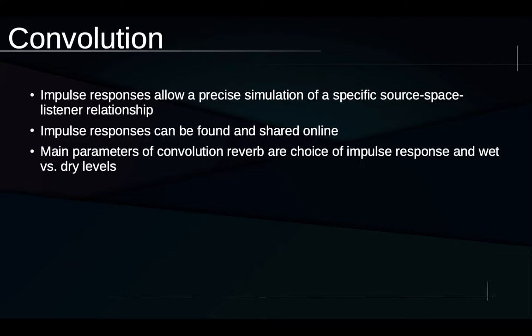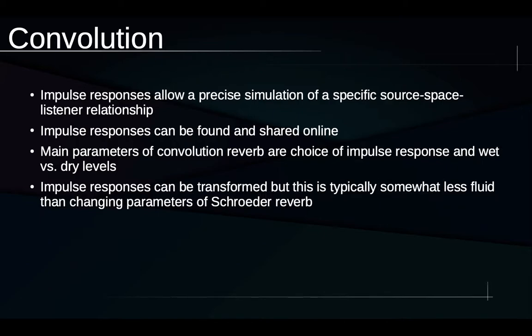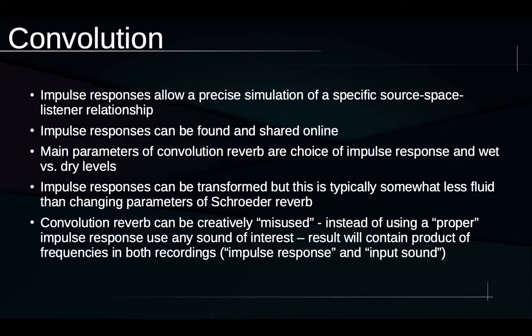The main parameters of convolution reverb are typically somewhat more limited than the Schroeder reverb. We'll have our choice of impulse response, like that file for the Swedish subway station, and then we'll be able to control the wet versus dry levels. Often there isn't much more beyond that. So the Schroeder reverberator typically has more parameters to control, more flexibility in that sense, but usually less realism. We can sometimes transform the impulse responses that we use with convolution reverb, but this is still going to be somewhat less fluid and flexible than just changing the parameters of a Schroeder reverb.